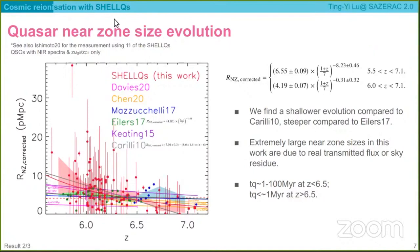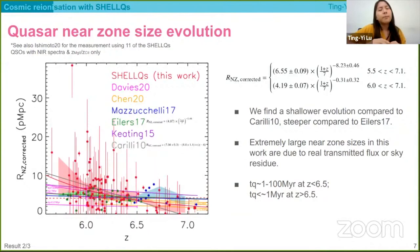Just to be clear, are all of these near zone sizes assumed to be spherical, or do you account for any potential variation due to the fact that the quasar might ionize preferentially in one direction versus another? Because this is just an observational measurement, we don't really try to account for those potential geometric effects.